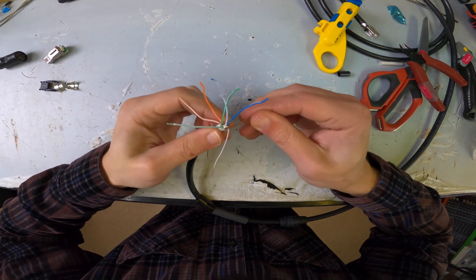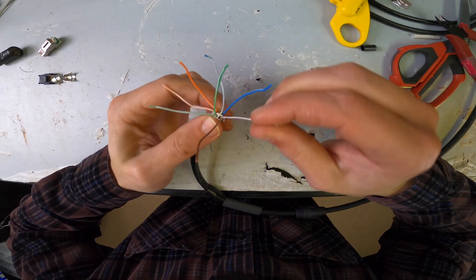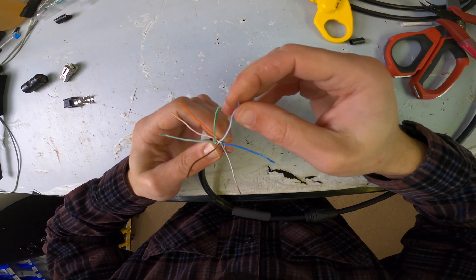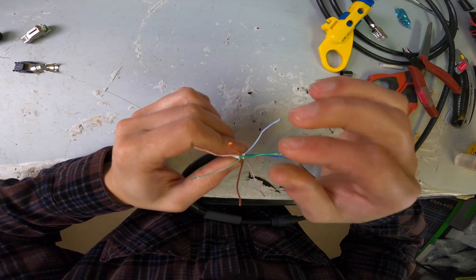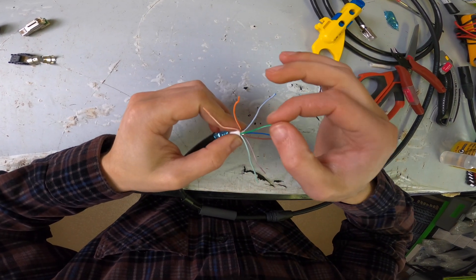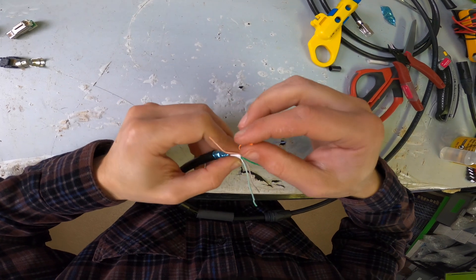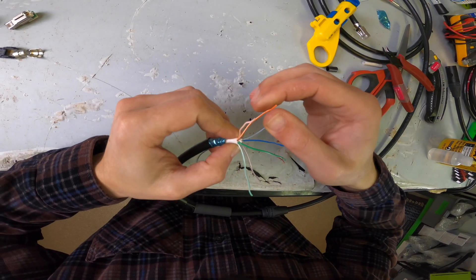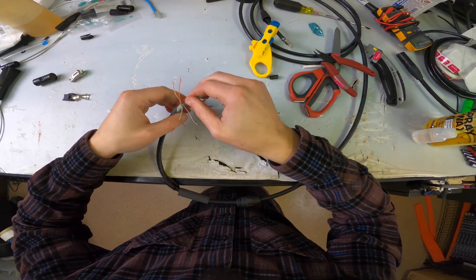Now, once these are apart, you want to inspect each conductor just to make sure that you didn't pull any of the shielding off, or the jacketing off, the insulation on the outside. You want to make sure that you're not seeing any bare copper along the middle portion of the wire. If you do, if you do see bare copper, you need to start over because you'll get crosstalk.